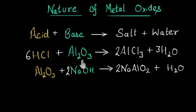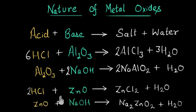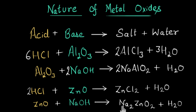So yes, aluminum oxide is an exception — it acts both as an acid and a base. We have one more example: zinc oxide. Zinc oxide also acts as both acid and base. In one example, zinc oxide reacts with an acid to give salt and water, so it acts as a base. In another example, zinc oxide reacts with a base to give salt and water, so it acts as an acid. So this is also an exception.